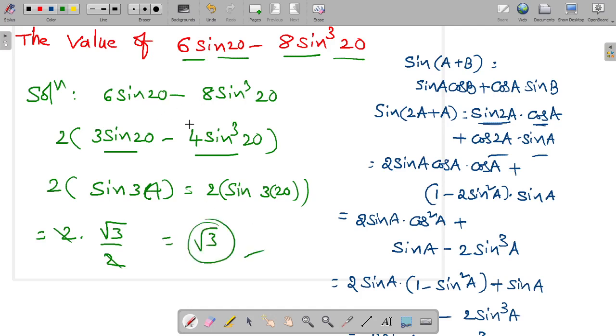If you have any doubt in formula, just check it here. Sine A plus B is equal to sine A cos B plus cos A sine B. Sine 2A plus A. Sine 3A can be written as sine 2A plus A. Apply sine A plus B formula. Sine 2A cos A, cos 2A sin A.